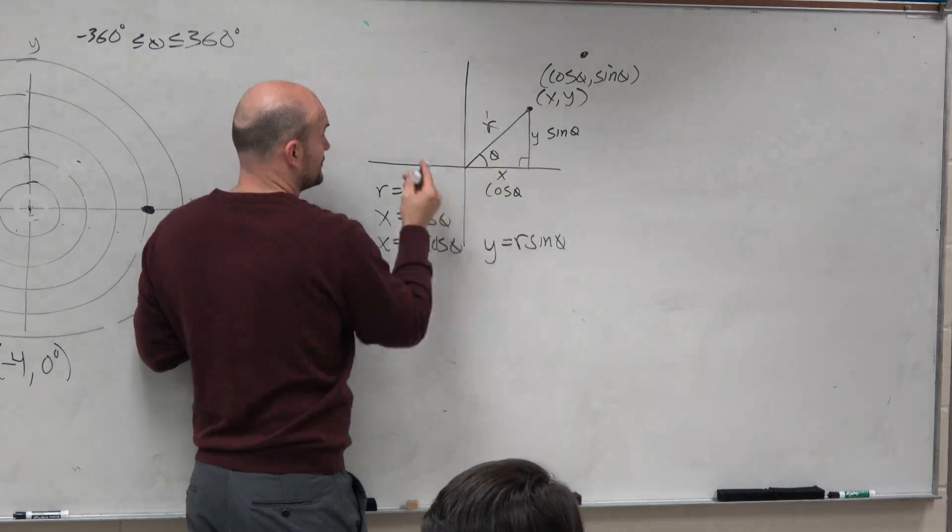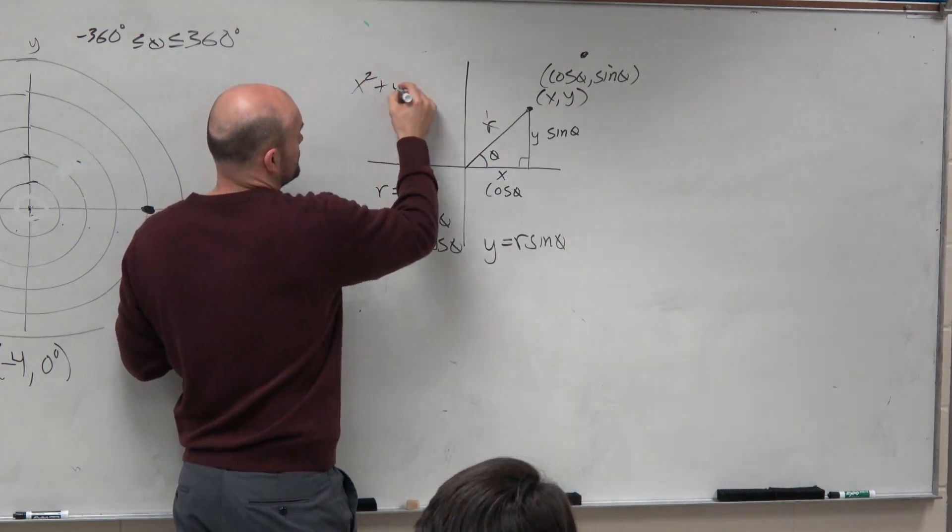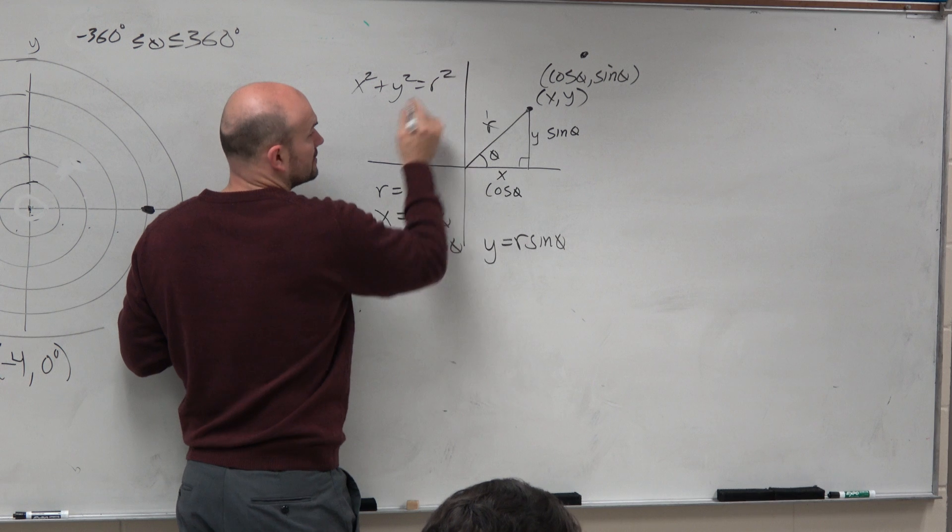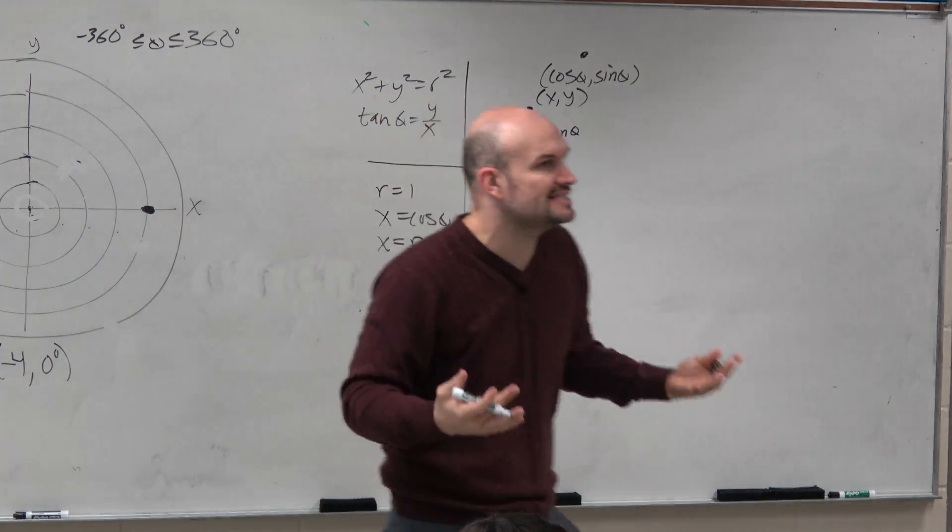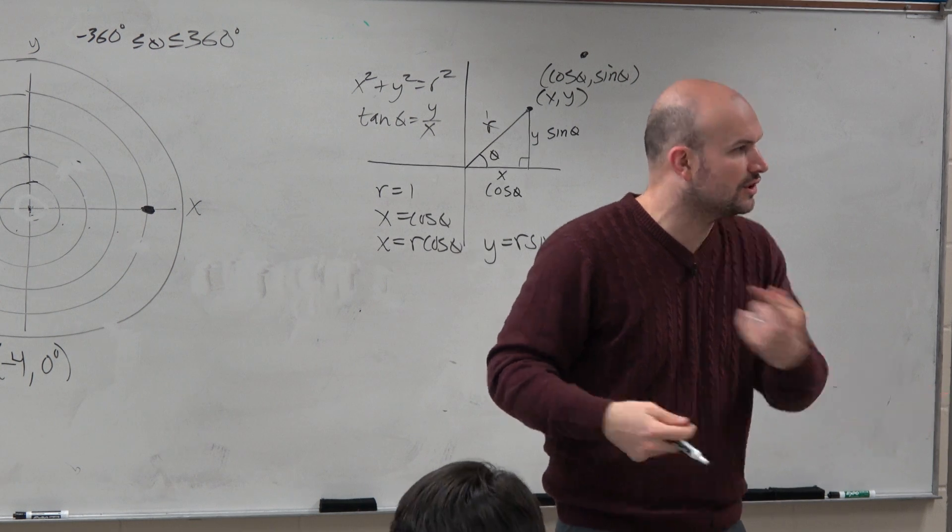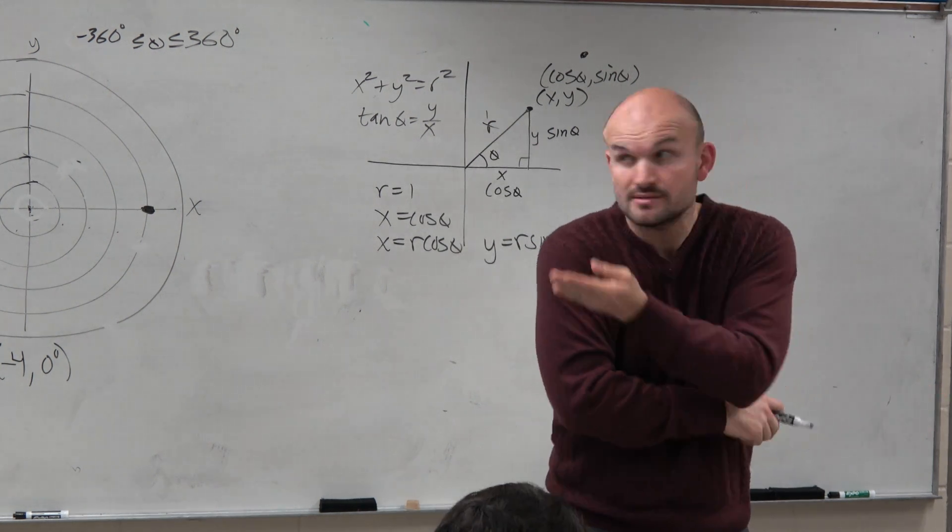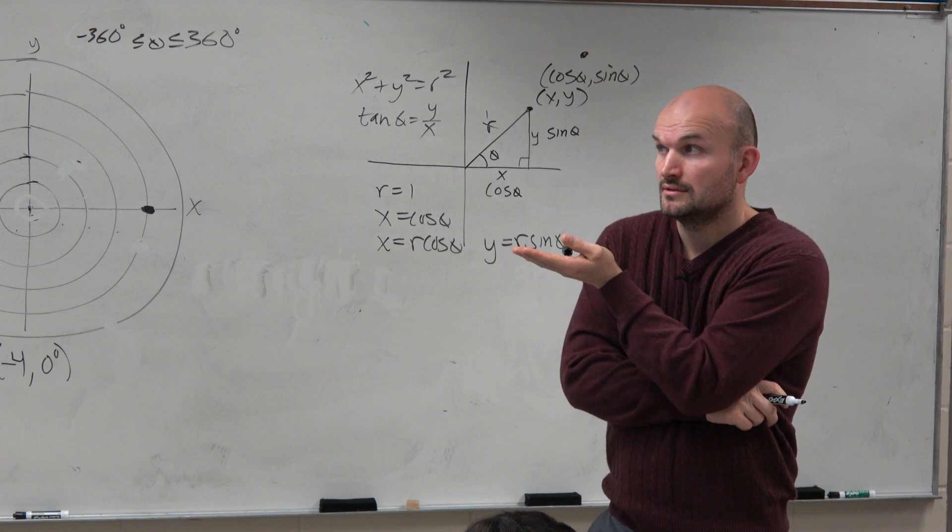The other thing we can also go through is, again, x² + y² = r². Tangent of θ equals y over x. These aren't things you need to know. I mean, these aren't things that are new to you. You already know these. Right? Yes?